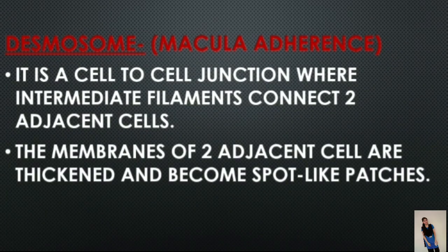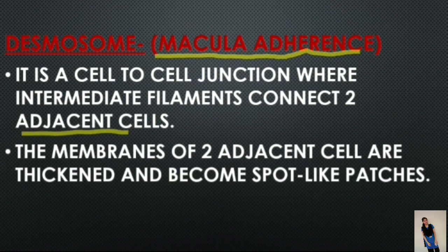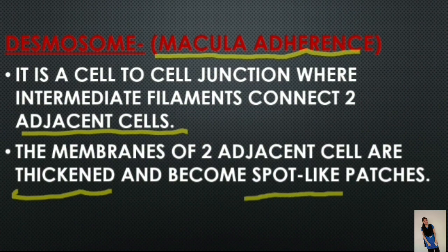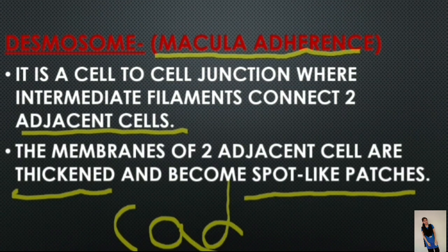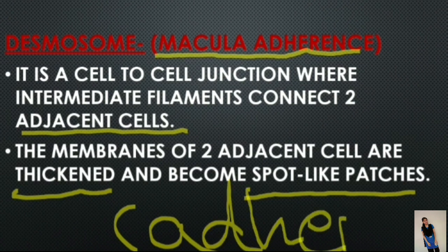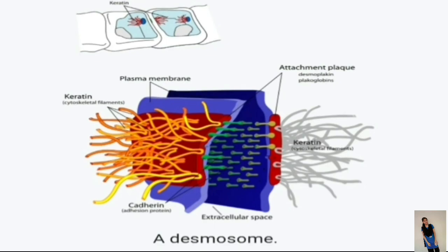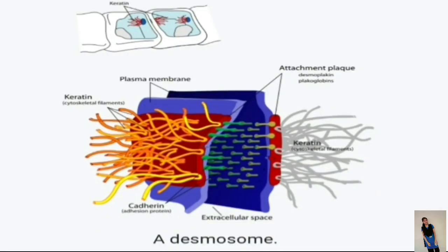Desmosome is also known as macula adherens. It is a cell-to-cell junction where intermediate filaments connect two adjacent cells. The membranes of two adjacent cells are thickened and become spot-like patches. The transmembrane protein involved here is cadherin. Here you can see the desmosome picture on this slide.